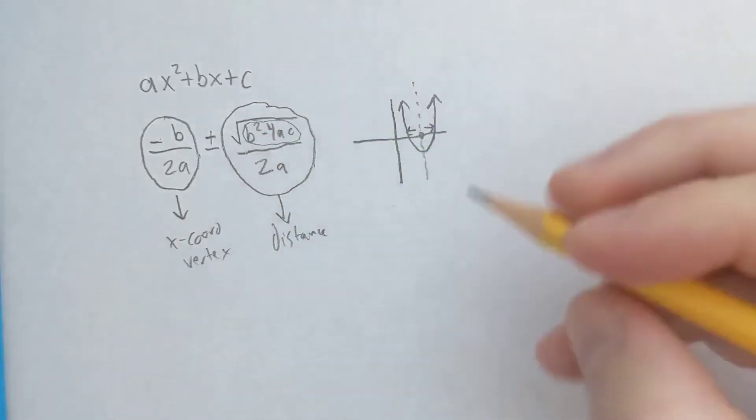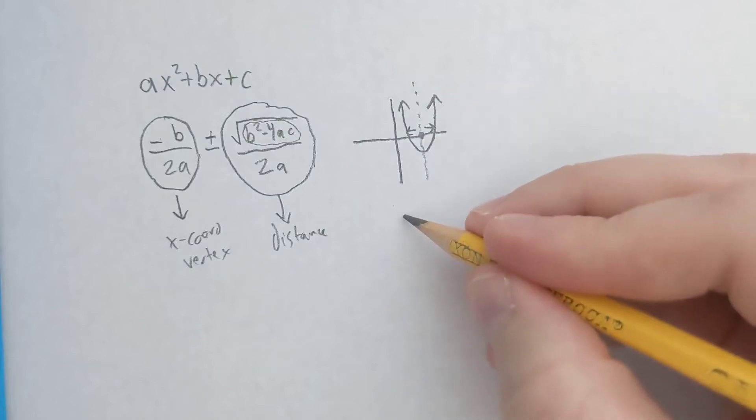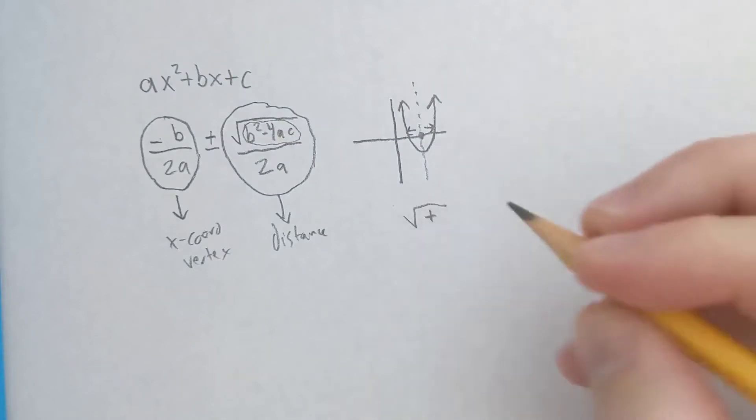And so in that case, our discriminant has to be some positive number. We don't really care what it is. We just care that it's positive. And if it is a positive number, then there are going to be two roots.